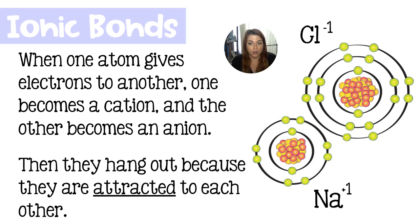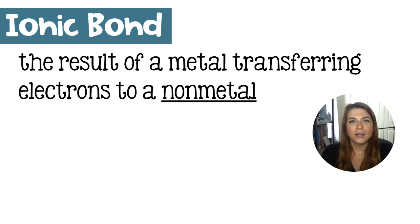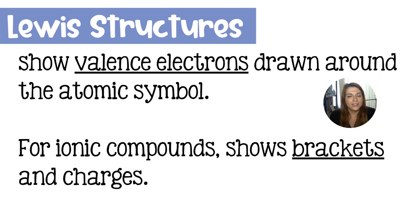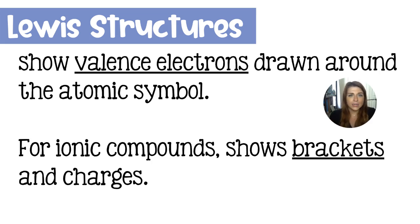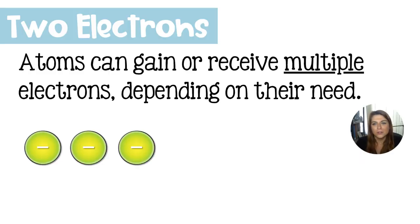We have drawn atomic Lewis structures before and now we will be drawing them for ions — and I promise it's not that much harder. Still, our Lewis structure is going to show valence electrons drawn around an atomic symbol, but in this case we're going to be drawing electrons with respect to the ion as opposed to the atom. In ionic compounds, we are going to wrap our non-metals in brackets and indicate the overall charge. Atoms can gain or lose multiple electrons depending on what they specifically need, or they can gain or lose electrons to multiple atoms depending on what they need.